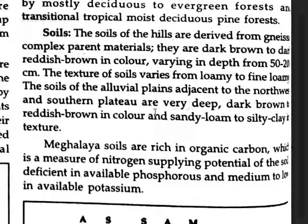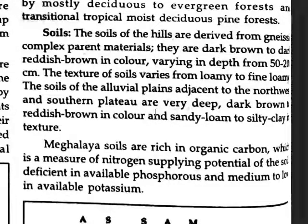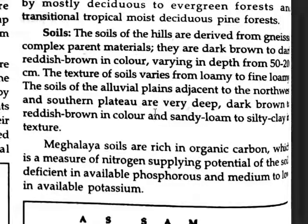The alluvial plains soils adjacent to the northwest and southern plateau are very deep, dark brown to red in color, and sandy loam to silty loam in texture. The Meghalaya plateau soils are rich in organic carbon, which is a measure of nitrogen-supplying potential of the soil.